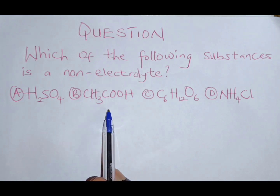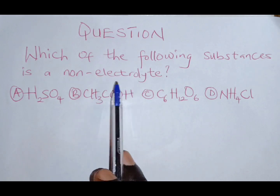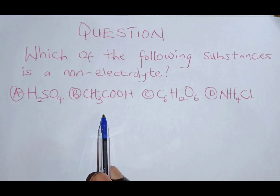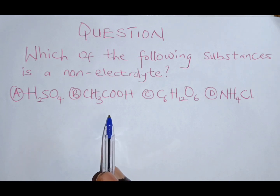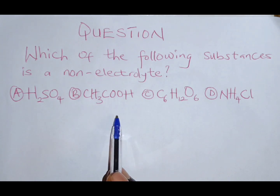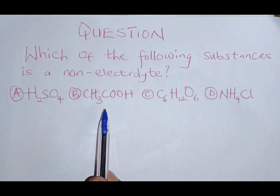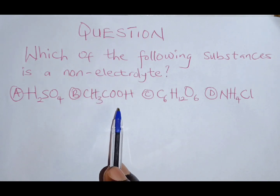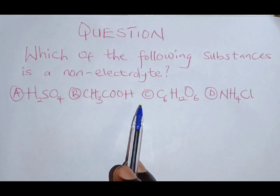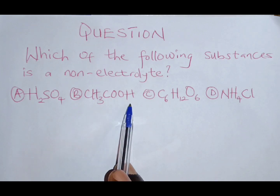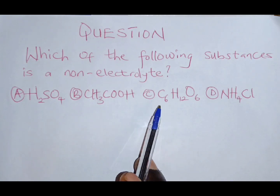A more practical way of defining it is that a non-electrolyte is a substance which, when dissolved in water, will not conduct electric current. This is a more realistic definition. When you dissolve a substance in water and electric current cannot pass through that solution, it is a non-electrolyte.